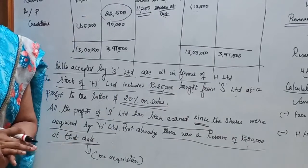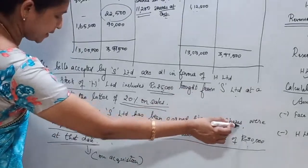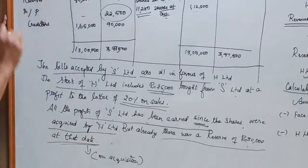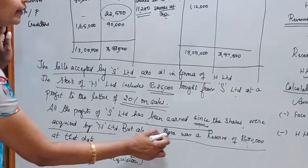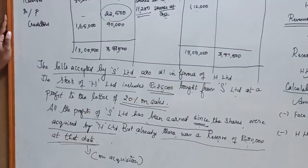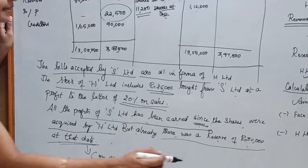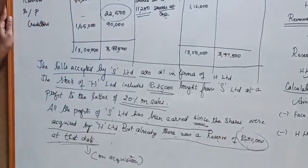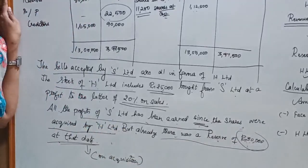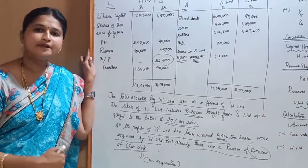All the profits of the subsidiary company are earned by it since after the shares were acquired by H Limited. But already there was a reserve of Rs.30,000 at the date of acquisition. So the reserve in the subsidiary company on the date of acquisition is Rs.30,000. All other reserves and profits beyond this Rs.30,000 are earned by the subsidiary company since acquisition.